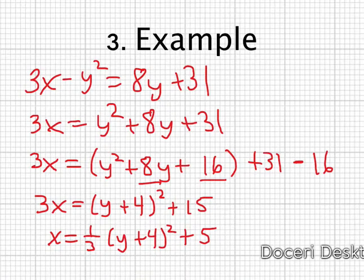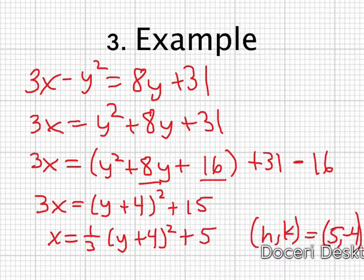And from here, I get all my other information. Right away, I can say my vertex, my h comma k, is 5 comma negative 4. Easy peasy lemon squeezy. That's my vertex.